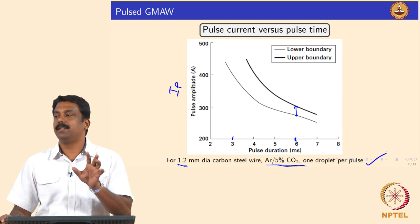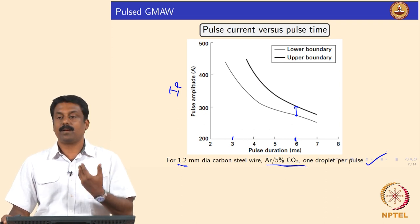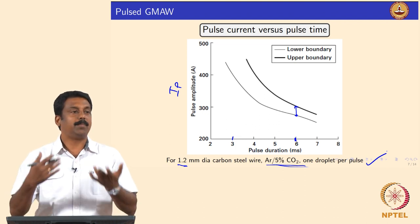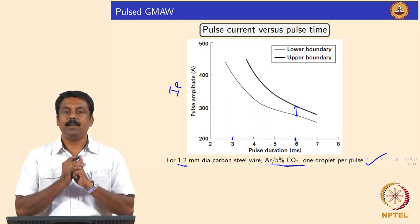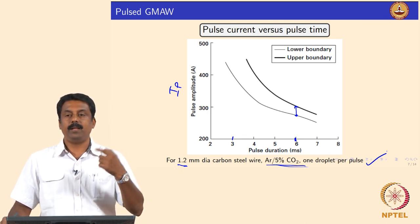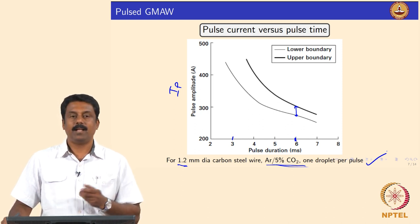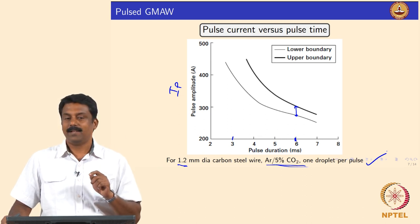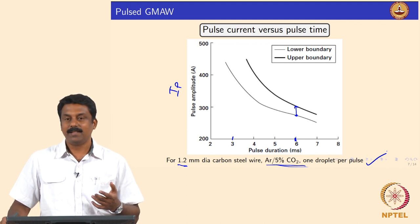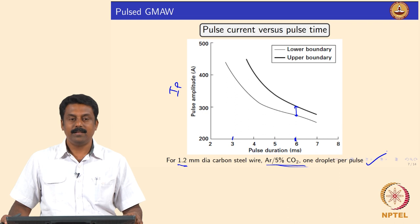Without this information we cannot arrive at the pulsing parameters. Advancements in microprocessor-controlled power sources use fundamental experimental data loaded into the power source. The power source can then choose — suppose it wants to use a mean current of 200 A — it calculates what IP, TP, IB, and TB are needed for a given I_mean to get one droplet per pulse, identifies the wire feed rate, and achieves stable transfer.